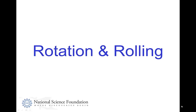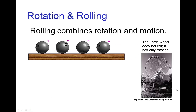Rotation and rolling. An important type of cyclic motion is rolling, and rolling combines rotation and motion — an object moving from one place to another. Something like a Ferris wheel simply has rotation in place.